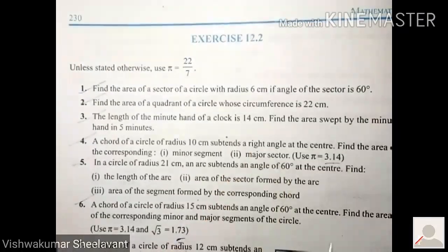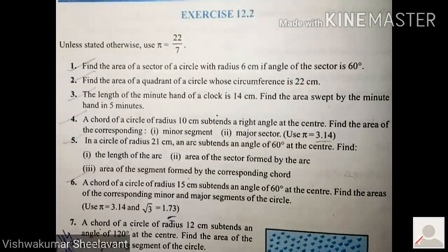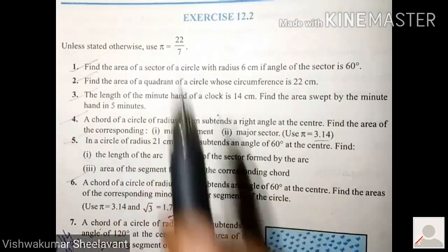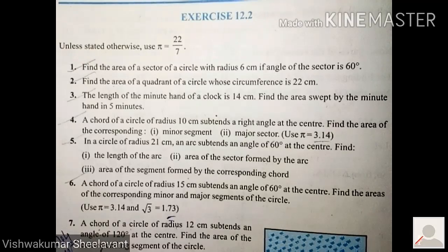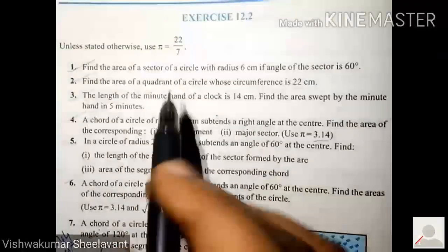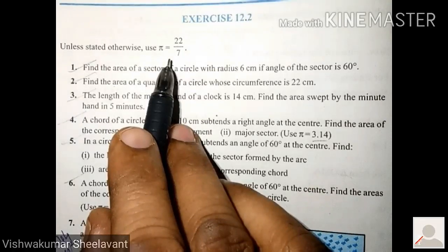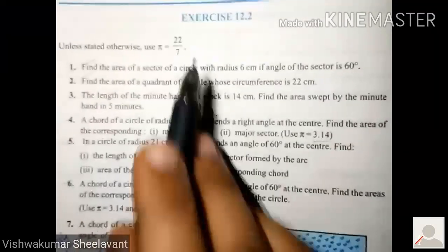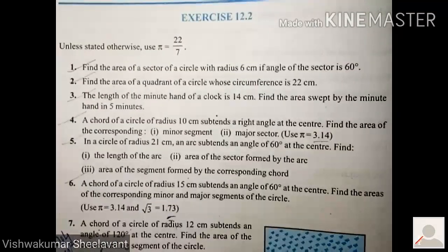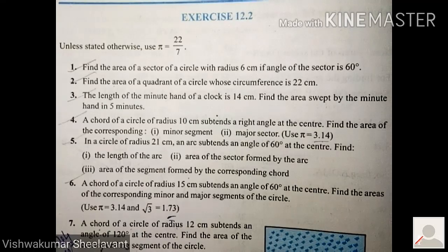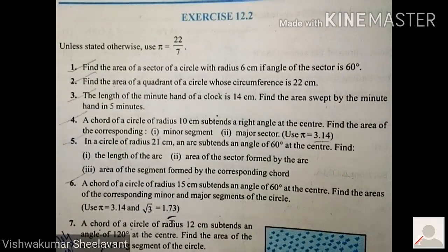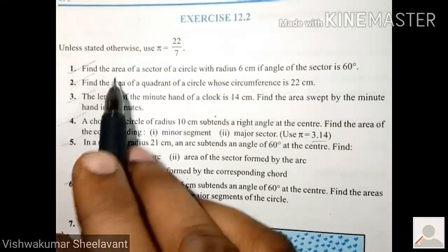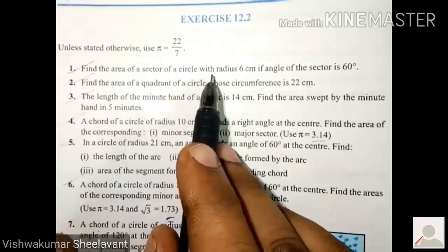Exercise 12.2. Here also pi value is given as 22 by 7. If given as 3.14, then only you take pi equal to 3.14, otherwise not, right? First question: Find the area of a sector of a circle with radius 6 centimeter if angle of the sector is 60 degree.